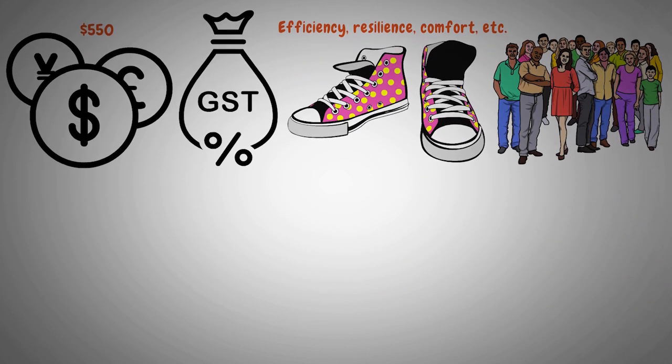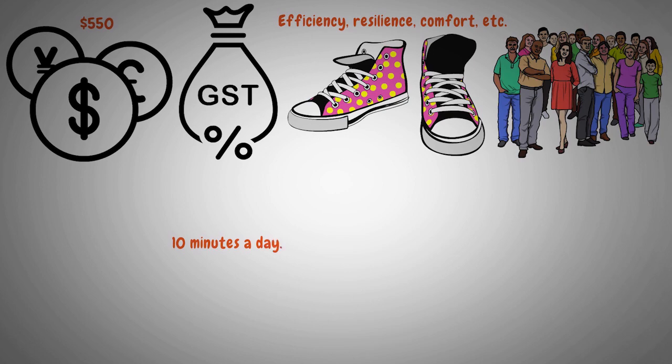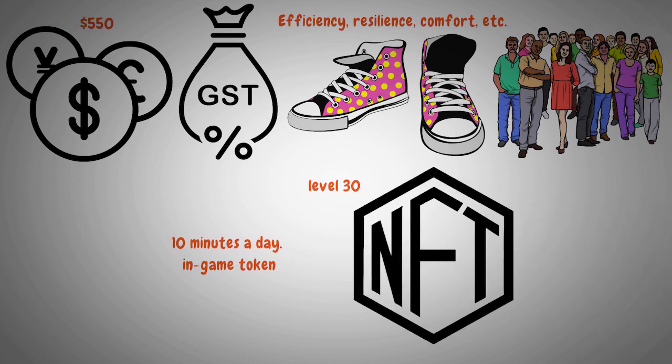There is one limitation. You can only earn within 10 minutes a day. A very important thing to remember is that GST is the in-game token, while the governance token is GMT. GMT is earned when the users move with a level 30 NFT, in this case sneakers, and take part in the in-game activities.